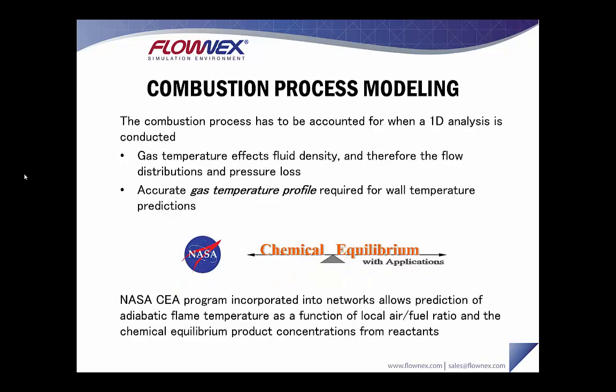The combustion process is also very important to take into account. Gas temperature affects fluid density and therefore the flow distribution and pressure loss through your network. An accurate gas temperature profile is required to calculate wall temperatures. Within Flownex there is a NASA CEA program that can be incorporated into networks and allows the prediction of an adiabatic flame temperature as a function of local air-fuel ratio, and it will also calculate the chemical equilibrium product concentrations from reactants.